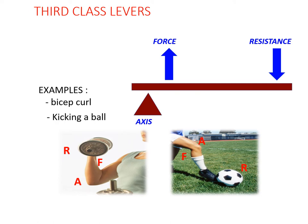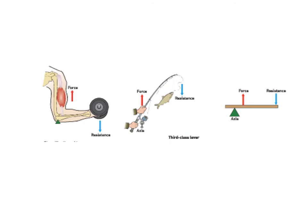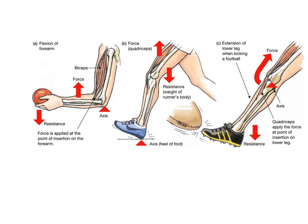A different diagram from the Jacaranda text shows the biceps curl: the axis is clearly the elbow, the biceps tendon attached to the lower forearm generates the force to overcome the resistance of the dumbbell — so with force in the middle, it's a third class lever. A fishing example also illustrates this: the axis is the end of the rod tucked into the hip, the force is the hands and arms, and the resistance is the fish at the end.